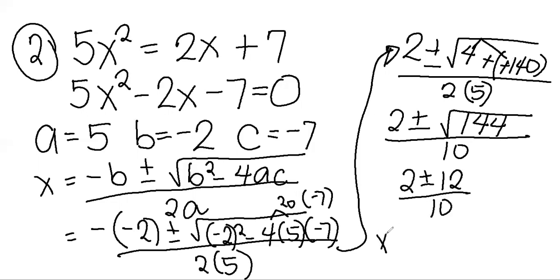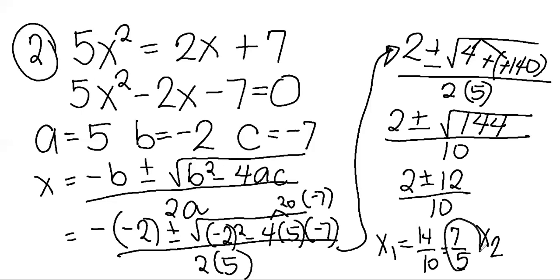So we have x₁ and x₂. For x₁: 2 plus 12 is 14, over 10. In lowest terms, dividing by 2 gives 7 over 5. For x₂: 2 minus 12 is negative 10, over 10, which equals negative 1. So our final answers are negative 1 and 7 over 5.